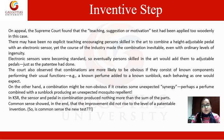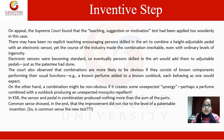The court observed that combinations are more likely to be obvious if they consist of known components performing their usual functions. In the KSR case, the sensor and pedal combination produced nothing more than the sum of its parts — no unexpected synergy. The Supreme Court found that the teaching, suggestion, and motivation test had been applied too woodenly, and that any person with common sense would see that the improvement did not rise to the level of a patentable invention. A combination might be non-obvious, however, if it creates an unexpected type of synergy.